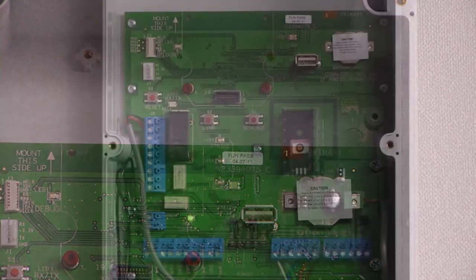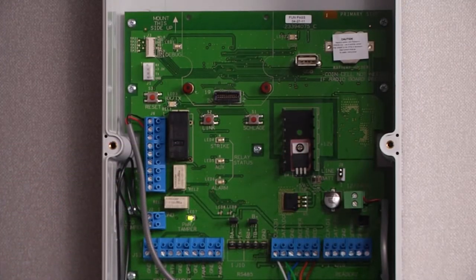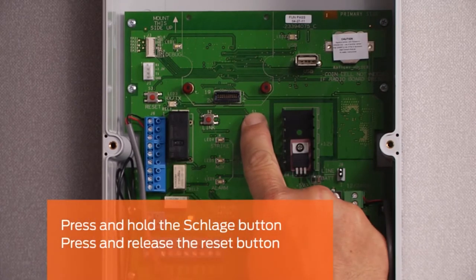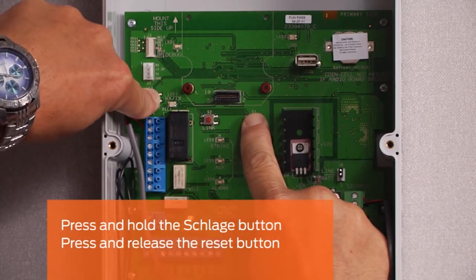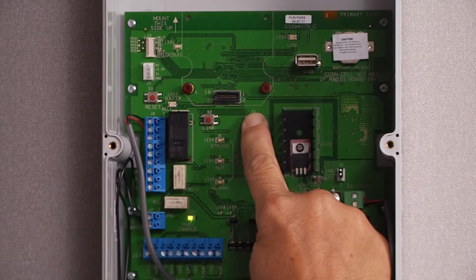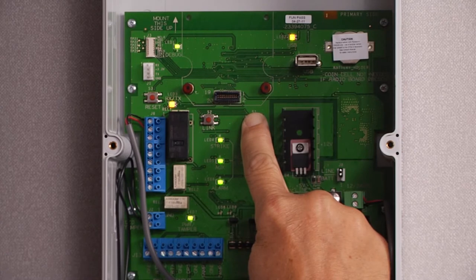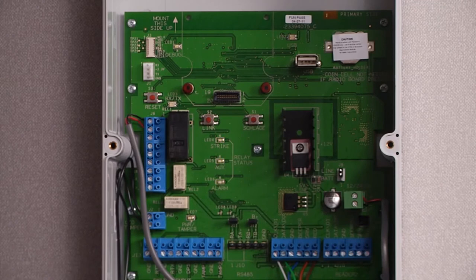To verify that the CT5000 is in electronic working order, press and hold the Schlage button and press and release the reset button. As you continue to hold the Schlage button, all LEDs will light, all relays will energize, and the credential reader beeper will continuously sound. Release the Schlage button to end the test.